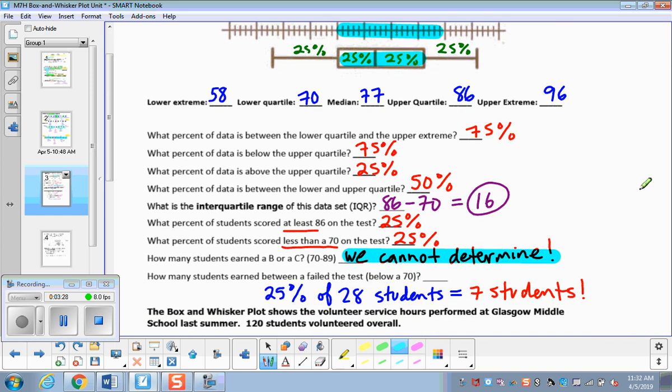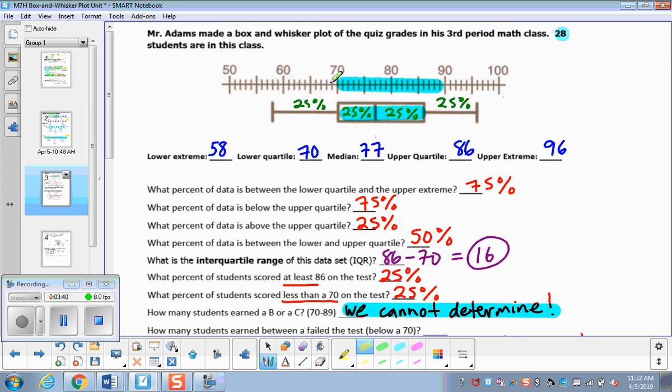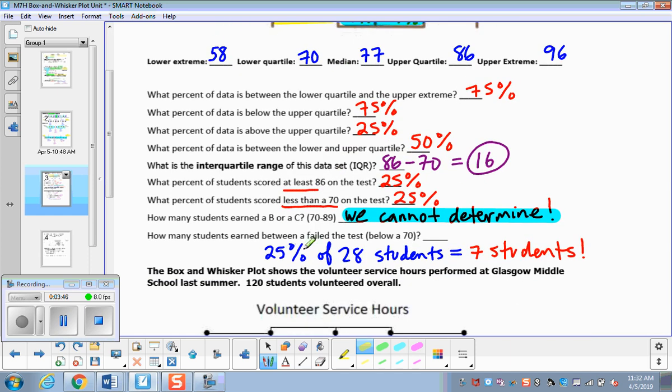All right. And now for the last question, how many students earned between—sorry, it should just say how many students failed the test, got below a 70. So how many students got below a 70? It's going to be anybody in this category, so these students, so a fourth of the class. And what is 25% of 28? So a fourth of 28, just divide it by four, we get seven students.